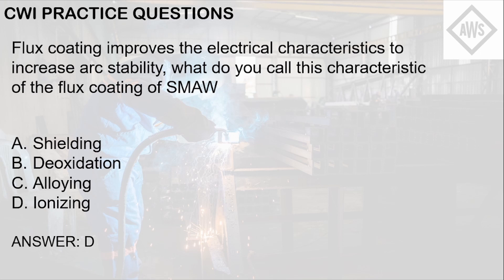The answer here is letter D: ionizing. As mentioned, shielding prevents harmful gases from entering the molten pool and contaminating the weld. Deoxidation produces chemicals that oxidize impurities in the molten pool. Alloying produces elements that improve the mechanical properties of the weld. That leaves letter D, ionizing, which is the improvement of electrical characteristics to increase arc stability. Arc stability is very important during stick welding because it is a manual welding process, and you need to ensure the arc is stable so as not to produce a defect.